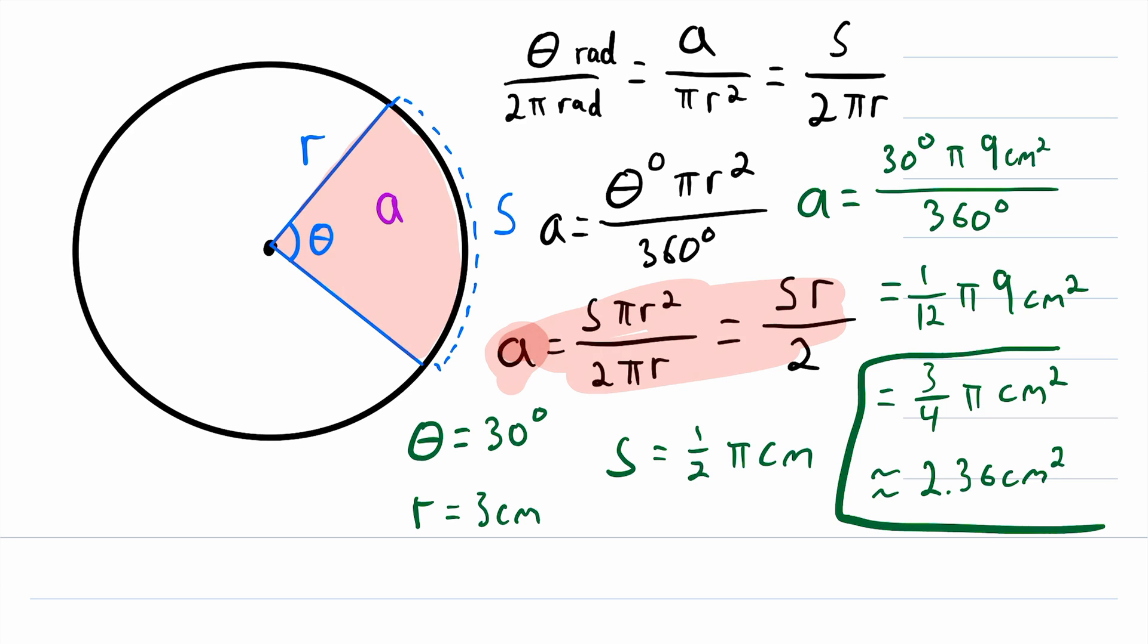So that's all there is to finding the area of a sector of a circle. You've got this beautiful equality between a few different ratios. And then using those equalities, whether your angle is measured in radians or degrees, you can derive a couple of formulas and easily find the area of the sector. So I hope this video helped you understand how to find the area of a sector of a circle. Let me know in the comments if you have any questions, need anything clarified, or have any other video requests.